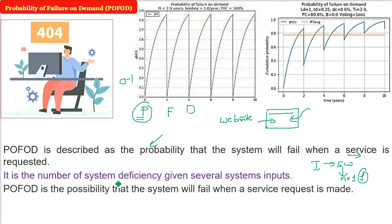POFOD is the probability that the system will fail when a service request is made. For example, if we asked 4 times and only one time it provided service, 1 by 4 is the probability, 0.25.